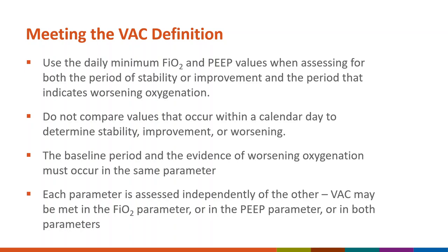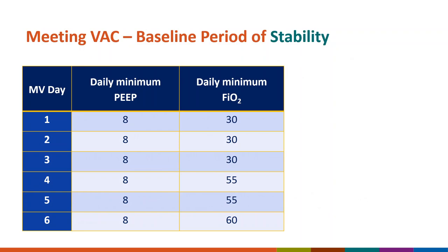The daily minimum values are used to assess for both the baseline period and the worsening oxygenation period. You will not be comparing values within a calendar day — you are comparing daily minimum values across calendar days. The baseline period and the evidence of worsening oxygenation must occur in the same parameter. You cannot have a period of stability in FIO2 and worsening oxygenation in PEEP and meet the VAC definition. Each parameter is assessed independently — VAC may be met in the FIO2 parameter, the PEEP parameter, or both.